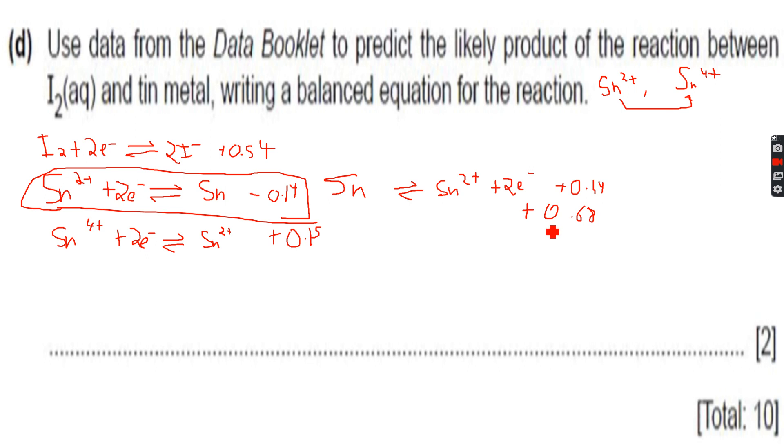The plus 0.68 is greater than plus 0.15, which means we can invert this equation as well. So instead of adding them first, it's better to look at the plus 0.54 and compare it to the plus 0.15. If the I2 is in excess, we can assume that.